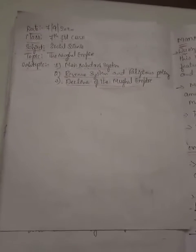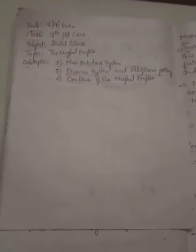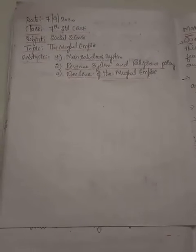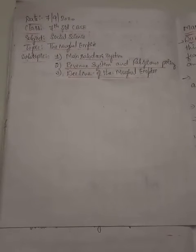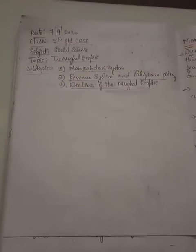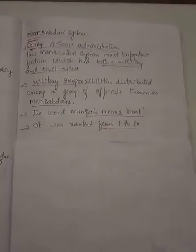All these we discussed in the previous class. In today's class we are going to discuss the Mansabdari system, revenue system, religious policies, and how the Mughal Empire declined.